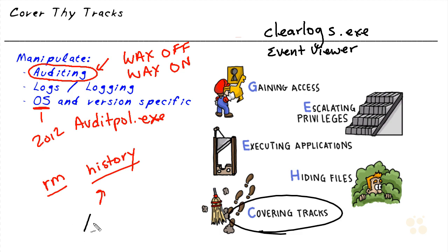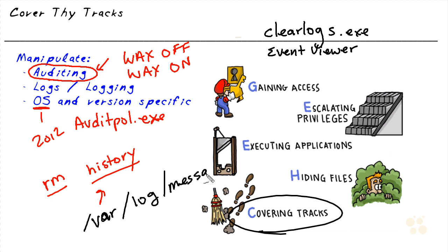On some Linux systems, we could go to /var, and then under var go to the log folder. With a text editor, we can go into messages and simply delete the contents of that messages file — an attempt to hide the activity that we've been doing on the system.